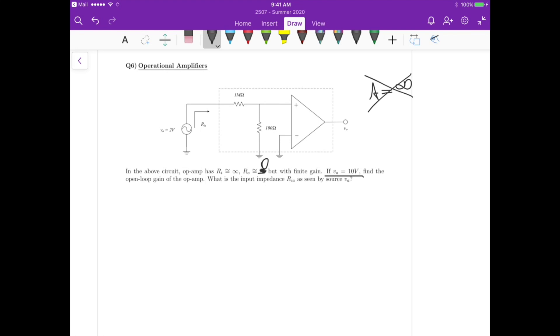Okay, so let's analyze the circuit. First, let's redraw the circuit considering a non-ideal op-amp. So we have our input voltage here. It passes through this one mega ohm resistance, then here it goes to the ground. So here we have 100 ohms.